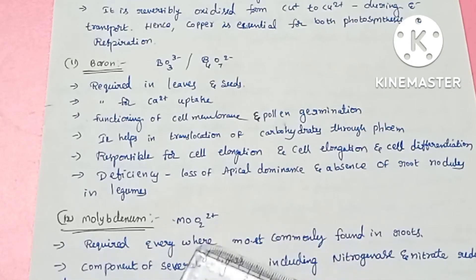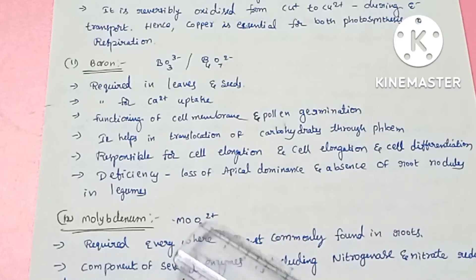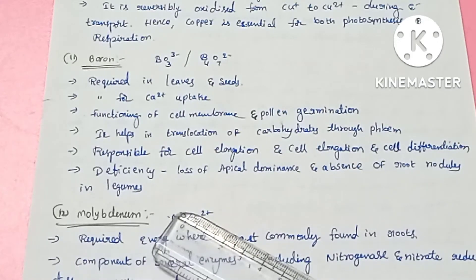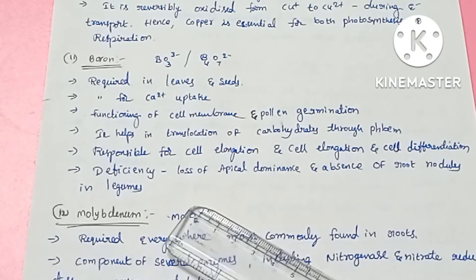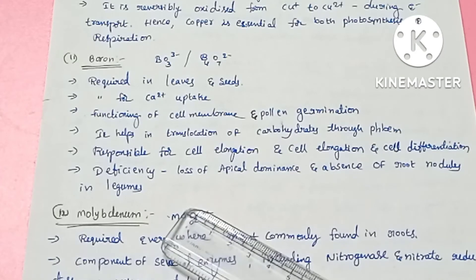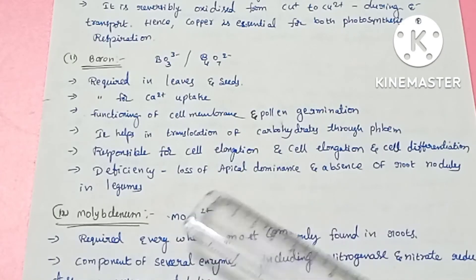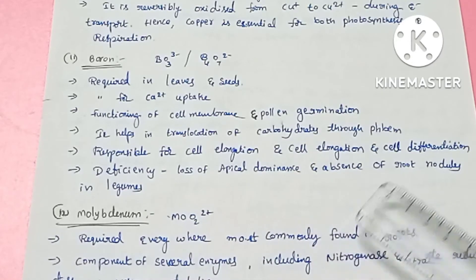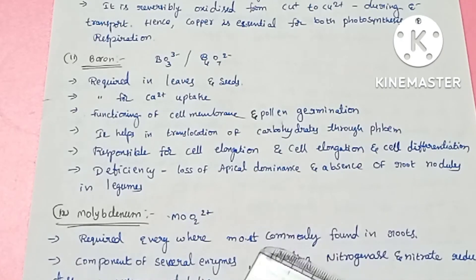When boron is absent, apical dominance is also affected. Boron is also involved in root nodule formation — when legume plants fix nitrogen, rhizobium bacteria form root nodules. The nitrogenase enzyme is involved in this nitrogen fixation process.